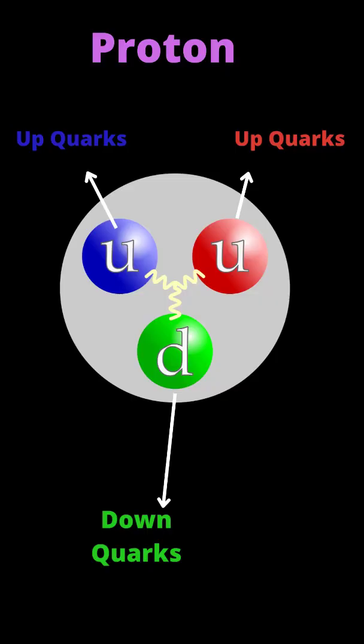Protons are subatomic particles that are found in the nucleus of atoms. They are made up of smaller particles called quarks, which are held together by the strong nuclear force. Specifically, protons are composed of two up quarks and one down quark.